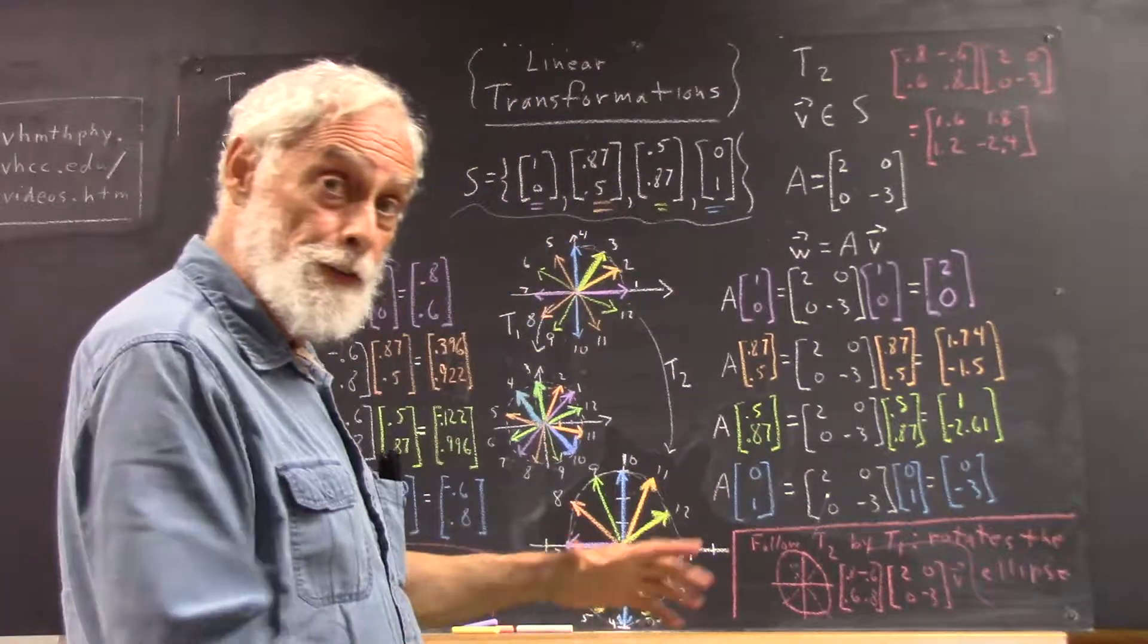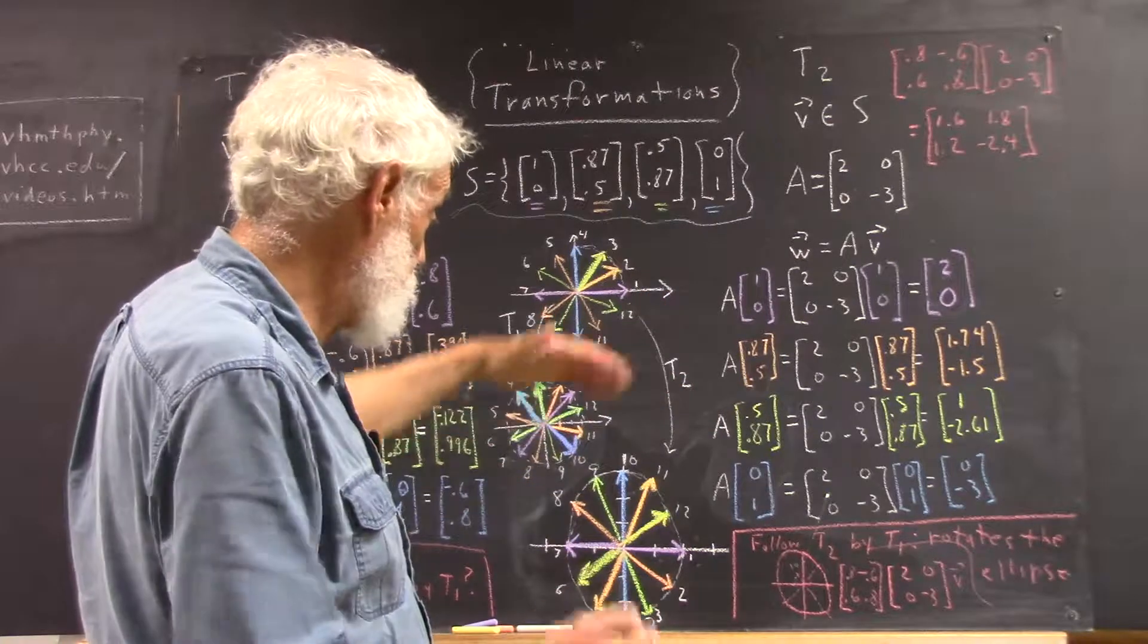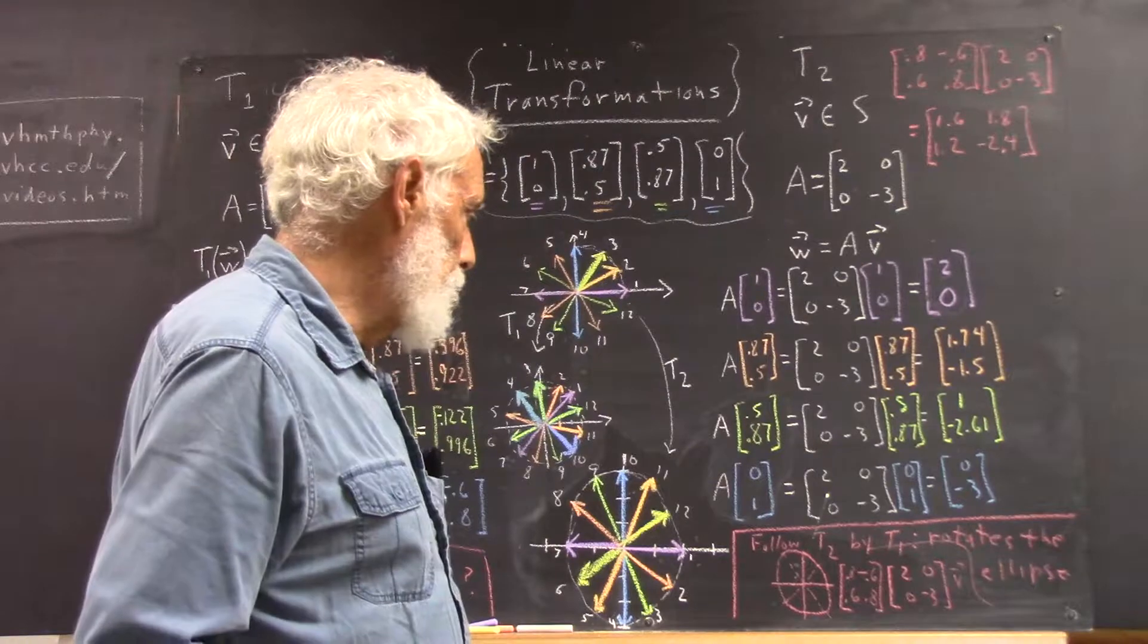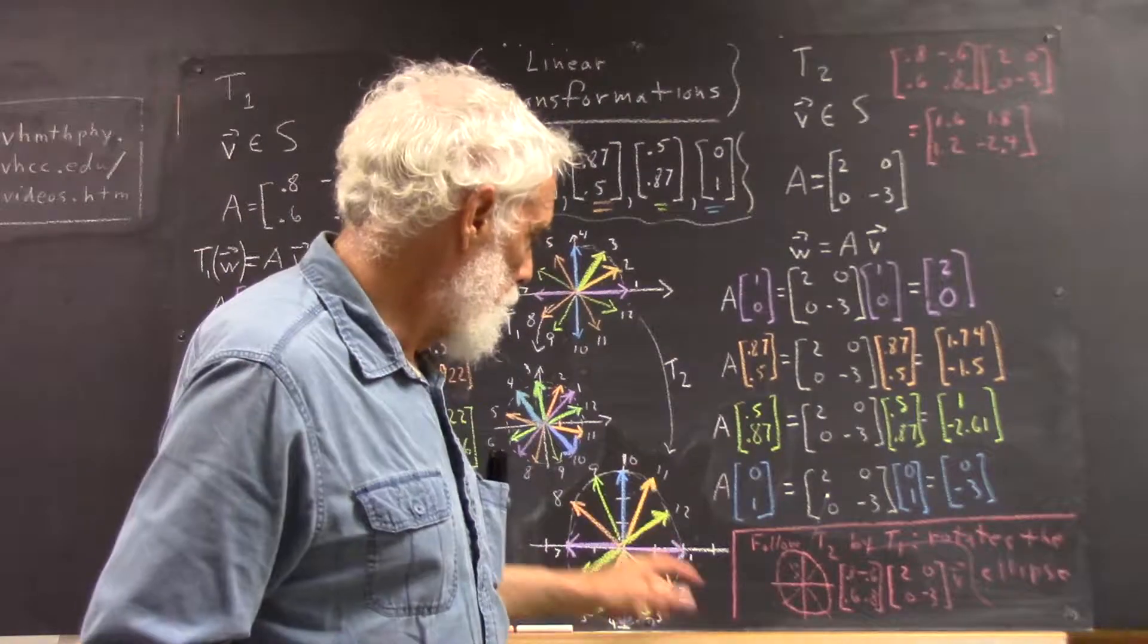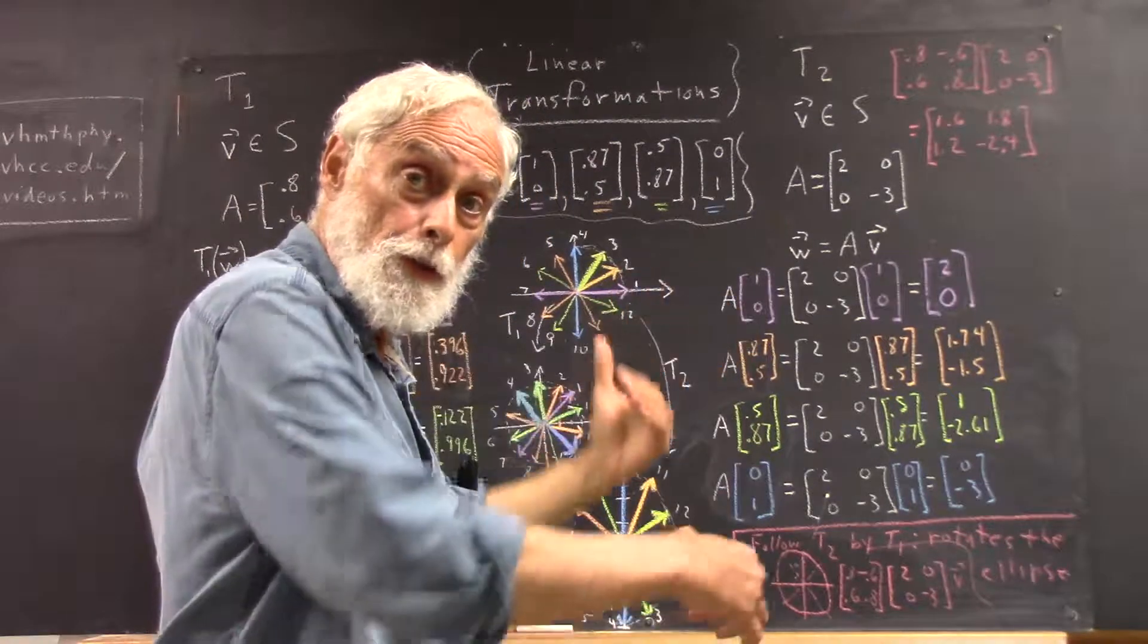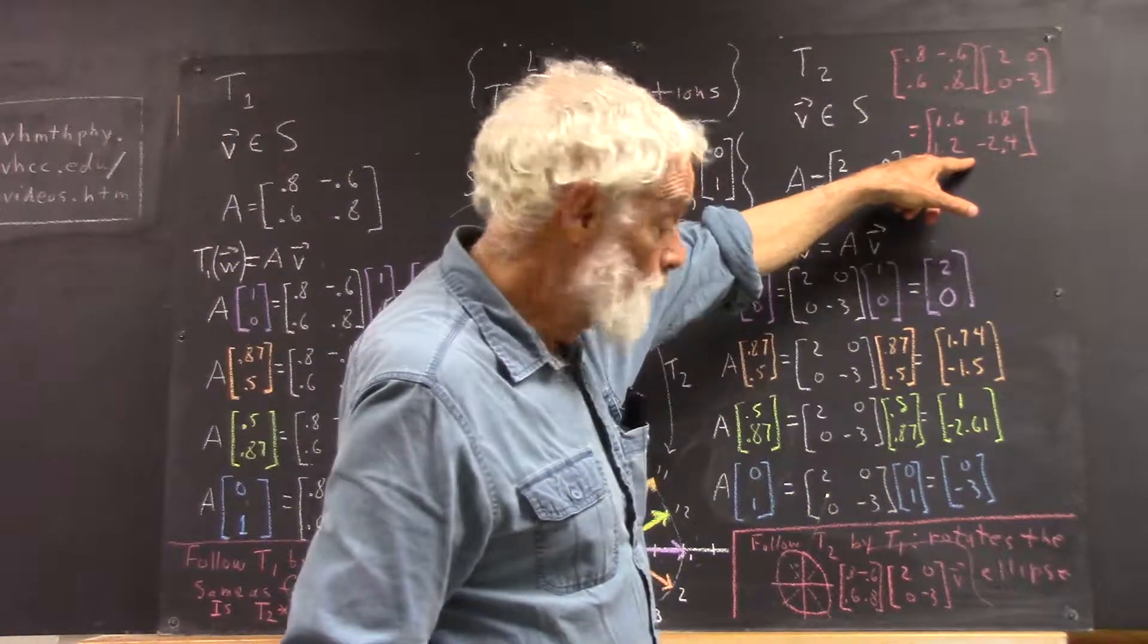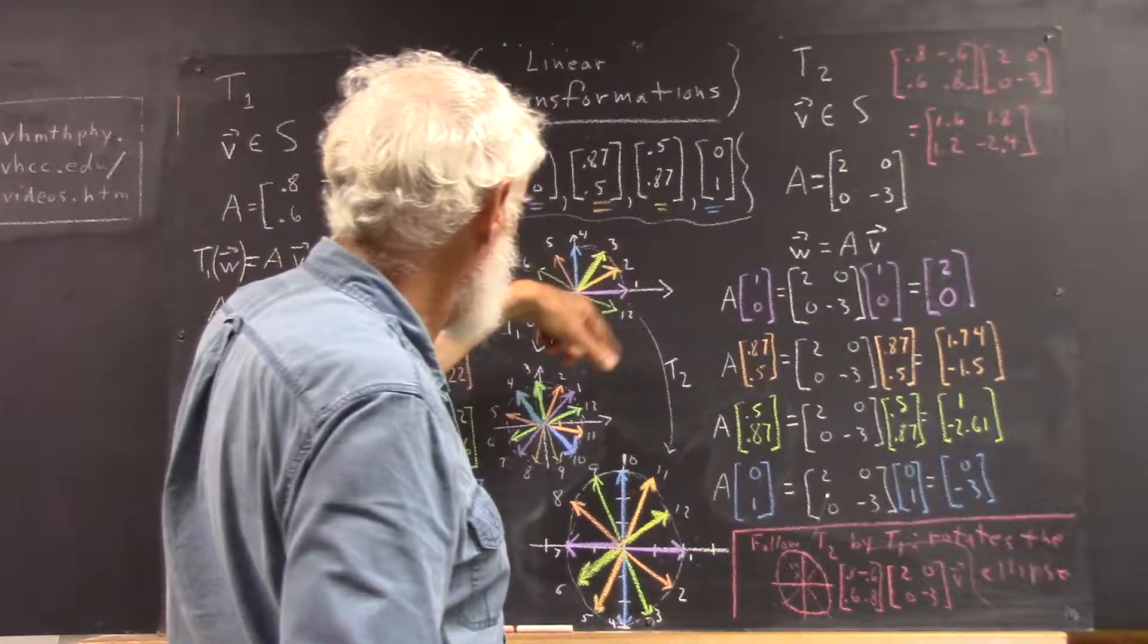This one really has six times the area of this one, so it's twice as wide, three times as high. This one has the identical area to this one, it's just rotated. And again, you would get this one by multiplying this matrix by each of these vectors.